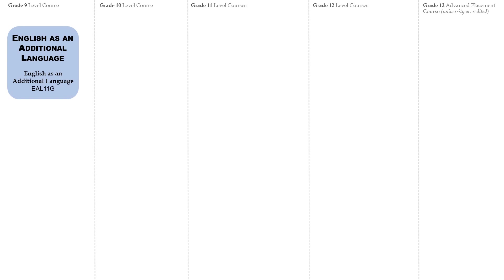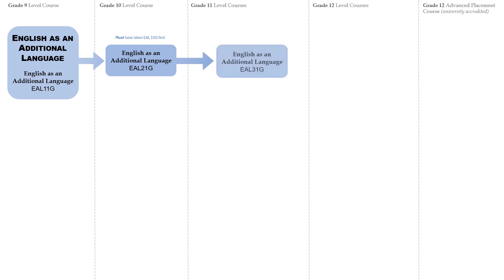Additional Language is an optional course that can be taken starting in Grade 9. The next levels of coursework progress from the previous courses.